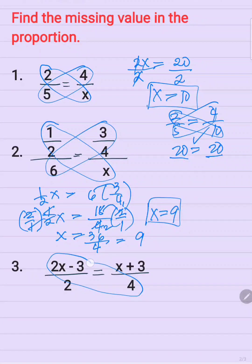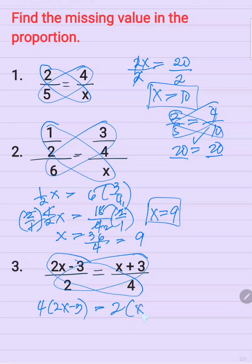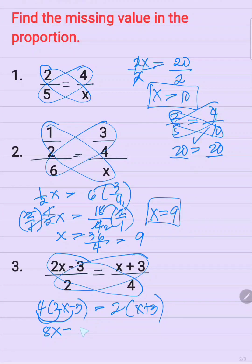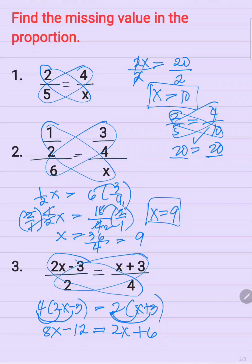By cross multiplication, we have 4 times 2x minus 3 is equal to 2 times x plus 3. So now you need to use the distributive property first. 4 times 2x is 8x, and 4 times negative 3 is equal to negative 12. Here also, distributive property gives 2x, and then 2 times 3 is equal to 6.